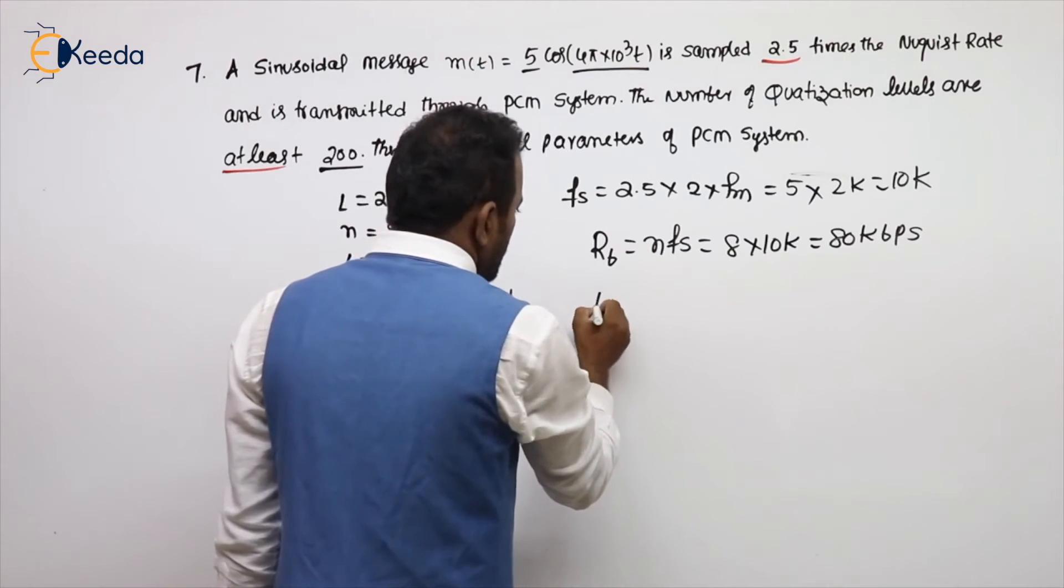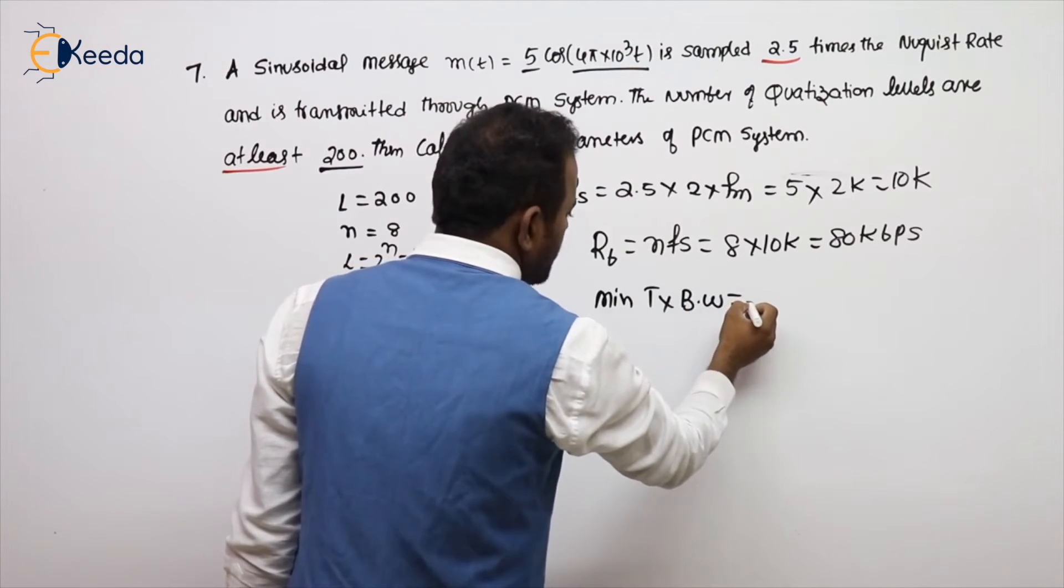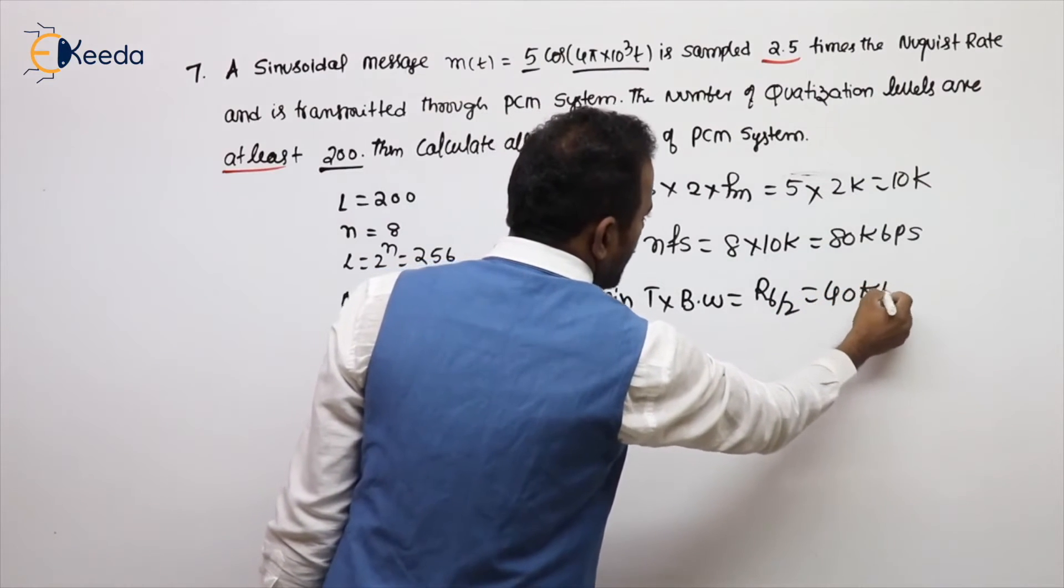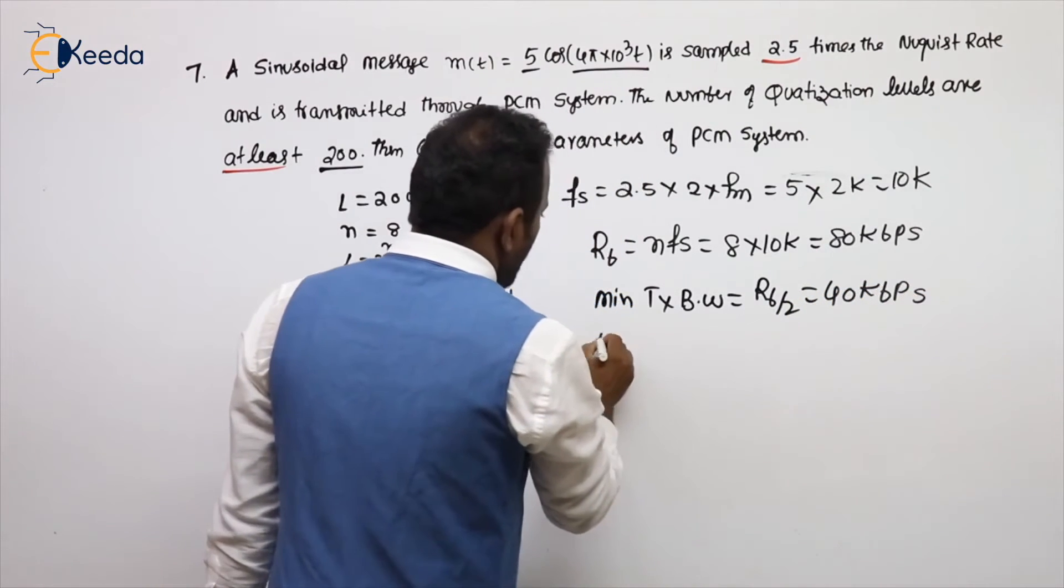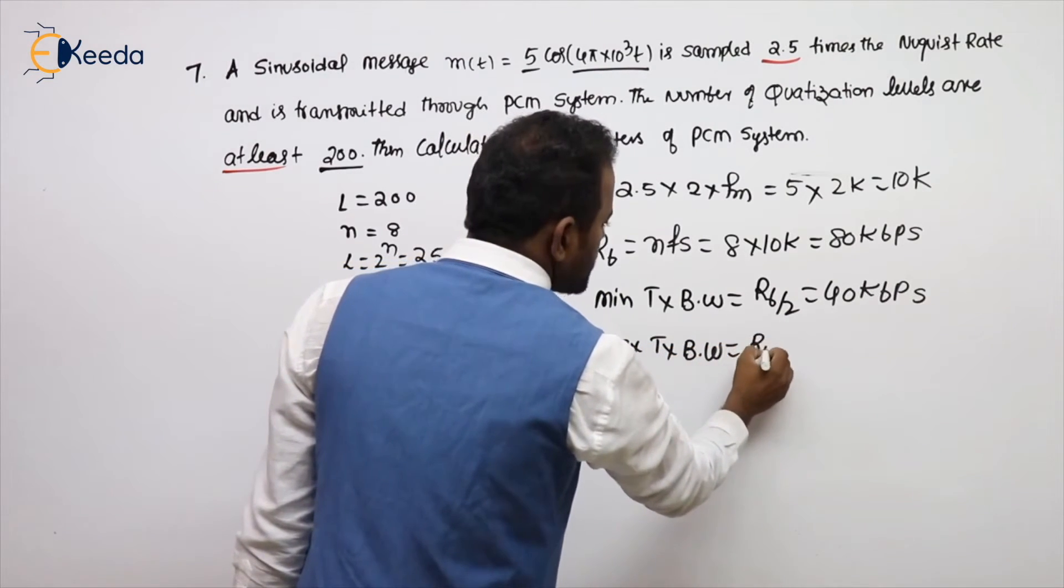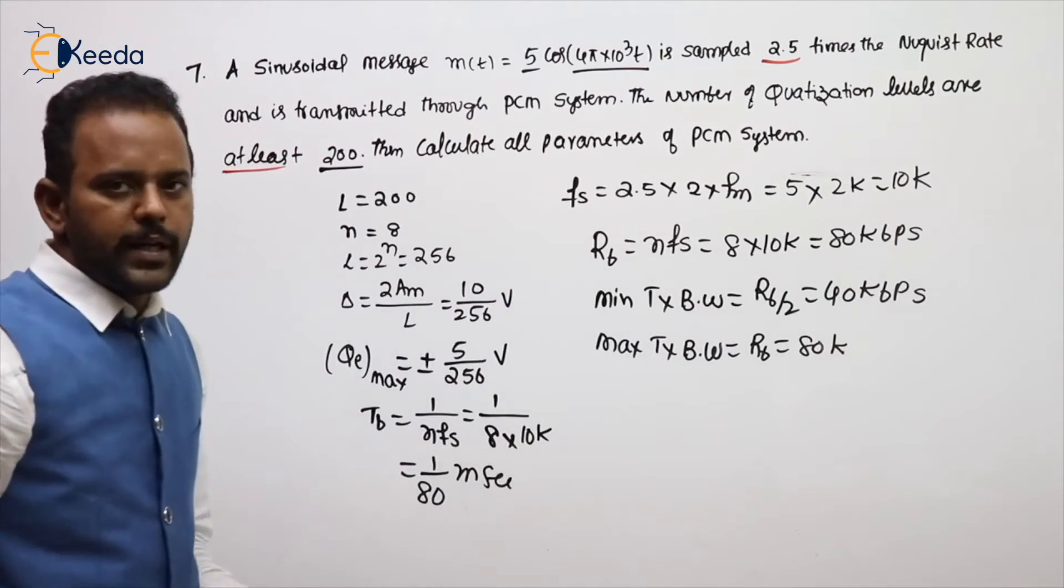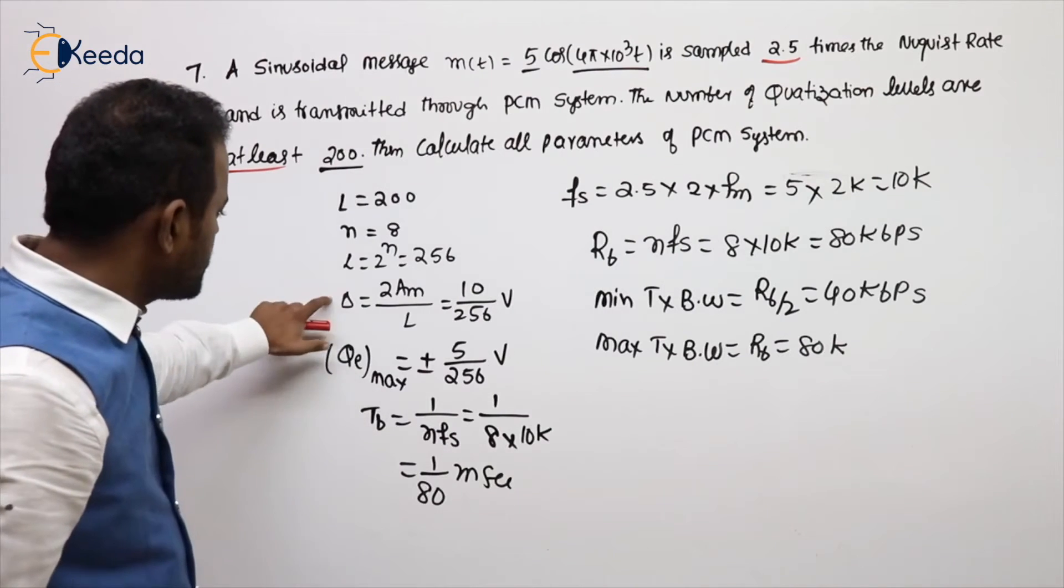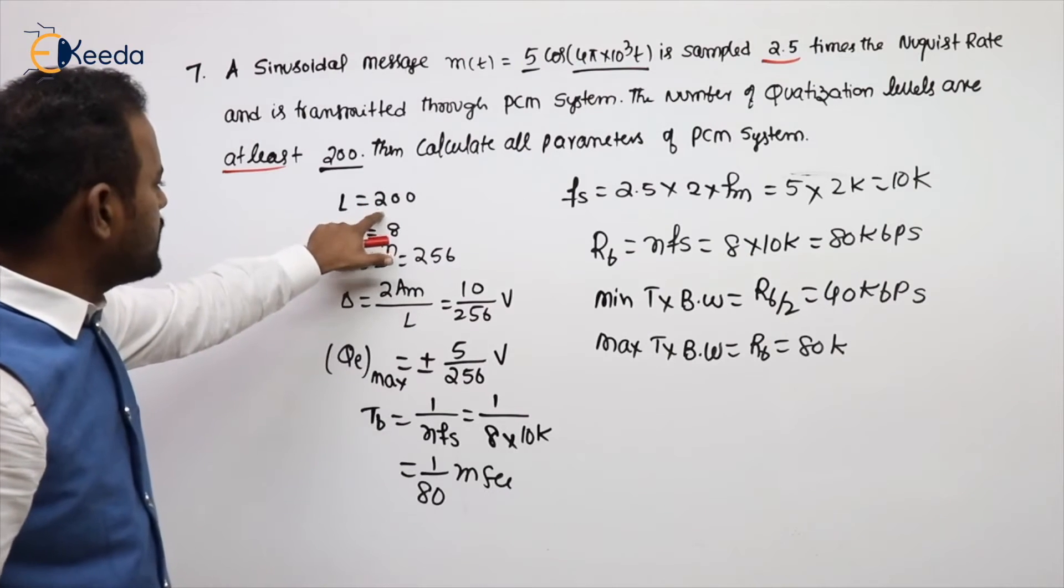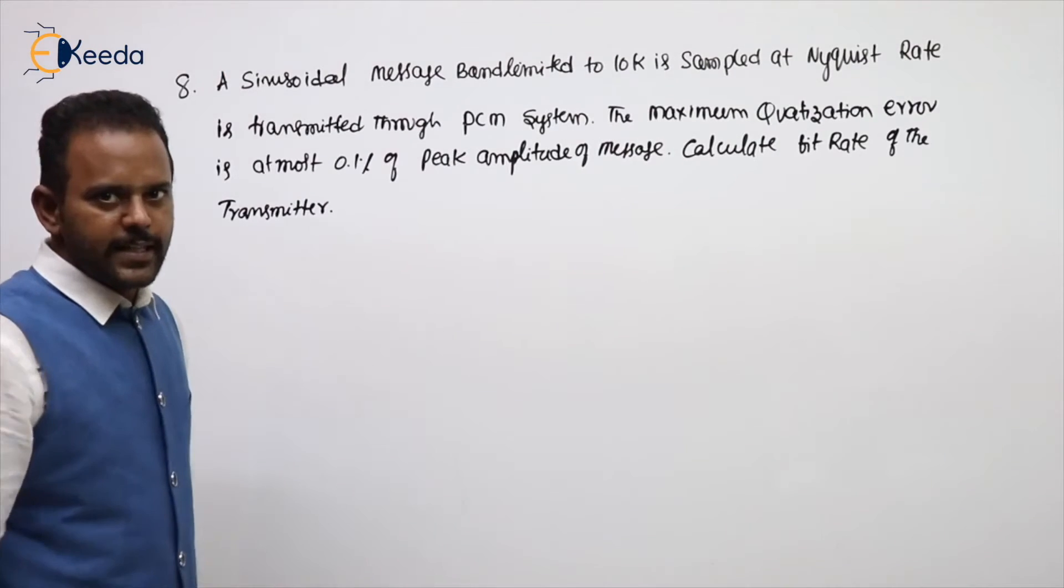Next, what is the minimum transmission bandwidth sir? Minimum transmission bandwidth is RB by 2 which is 40 Kbps. What is the maximum transmission bandwidth sir? Maximum itself is RB that is 80 Kbps. These are all parameters. Here only the difference is slight difference in the formulas of these two, and here at least 200 means you need to take N value 8.